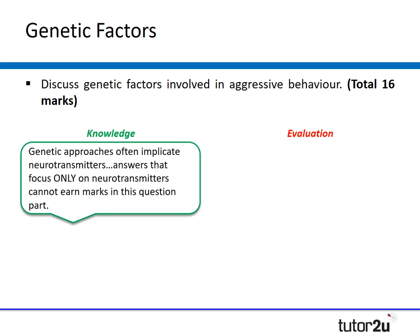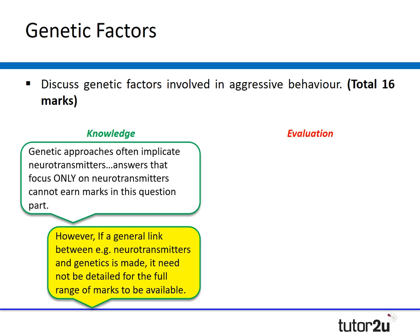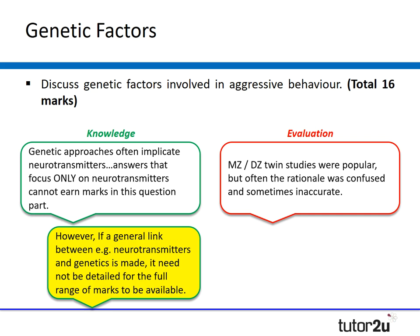The examiner noted that genetic approaches often implicate neurotransmitters, but students typically struggle to ensure their answer is actually a genetic answer and not just about neurotransmitters. Students who focus only on neurotransmission cannot earn any marks because they must link back to genetic explanations and inheritance. However, a general link between neurotransmitters and genes — even without detail — can earn full marks. In evaluation, students like to use MZ and DZ twins but often provide inaccurate information, so students need to understand concordance rates explicitly.